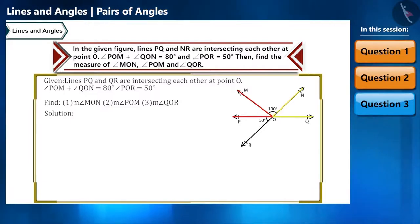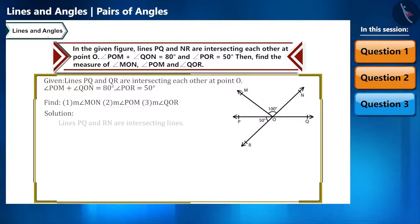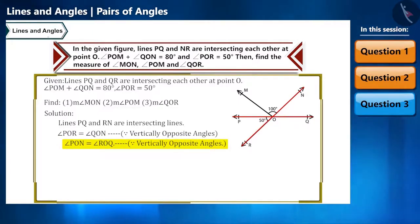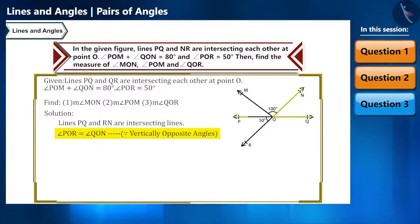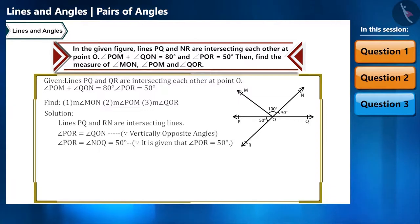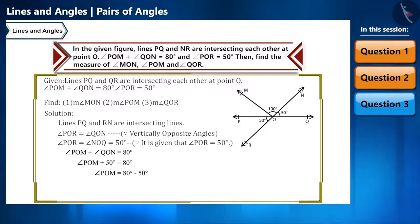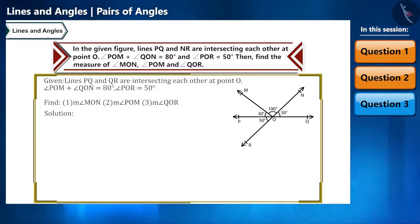Now let's find angle POM. We are given angle POM plus angle QON equals 80 degrees. Since lines PQ and RN intersect, angle POR equals angle QON by vertically opposite angles. Since angle POR is 50 degrees, angle QON is also 50 degrees. Substituting into the equation, angle POM plus 50 equals 80, so angle POM equals 30 degrees.